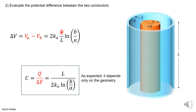The capacitance is Q over delta V. Taking Q divided by delta V, we bring the L up and bring down the 2ke·ln(B/A). This is the capacitance of a cylindrical capacitor, and as expected, it depends only on the geometry — specifically the length of the capacitor and the inner and outer radii a and b.